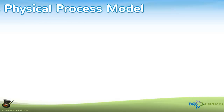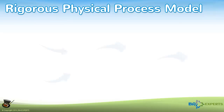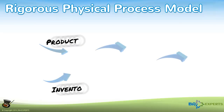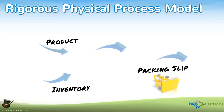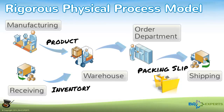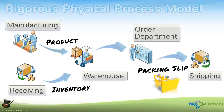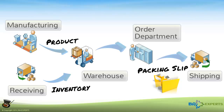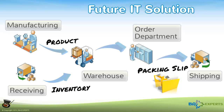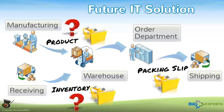A rigorous physical process model shows the movement of physical objects and data amongst the units in an organization. The idea is to represent the real world as closely as possible. Given that the proposed information technology, or IT solution, will need to know something about the physical objects, these will have to be represented in data as well.